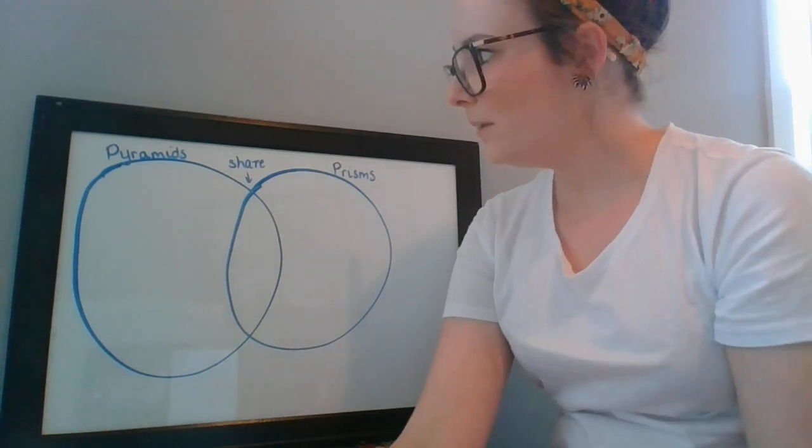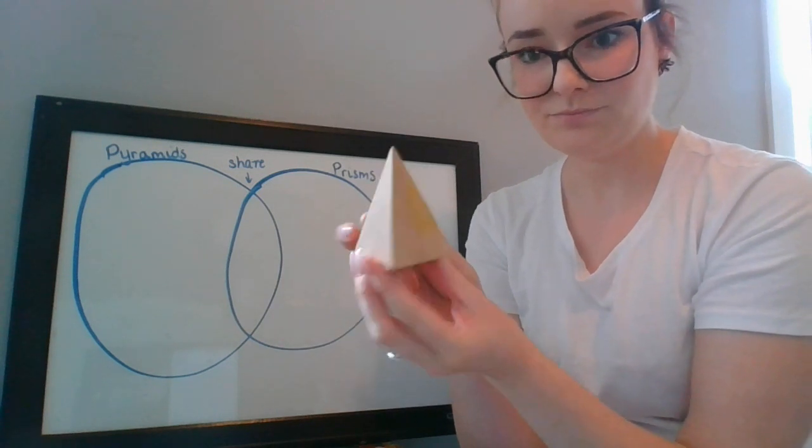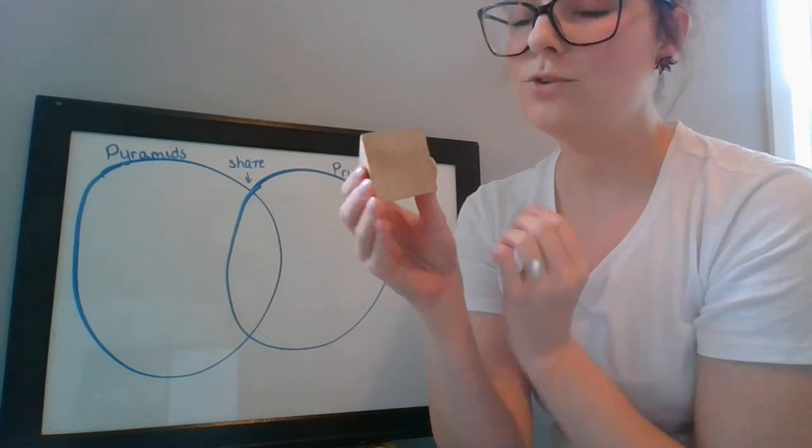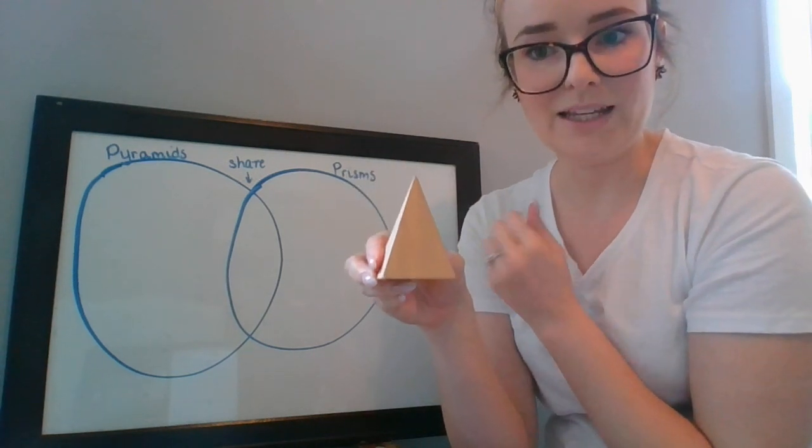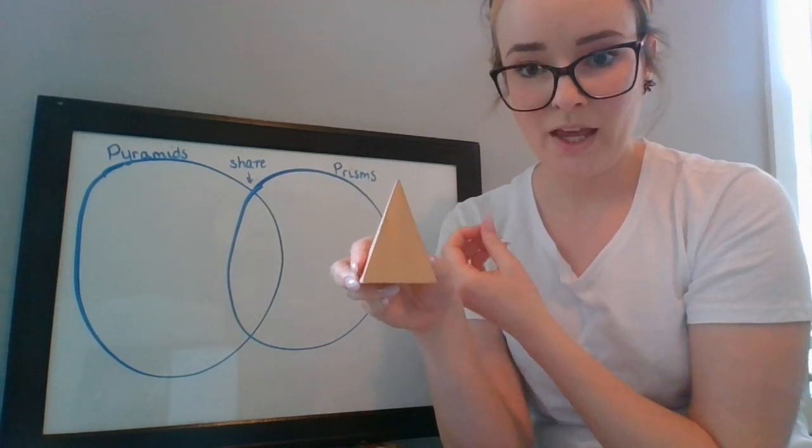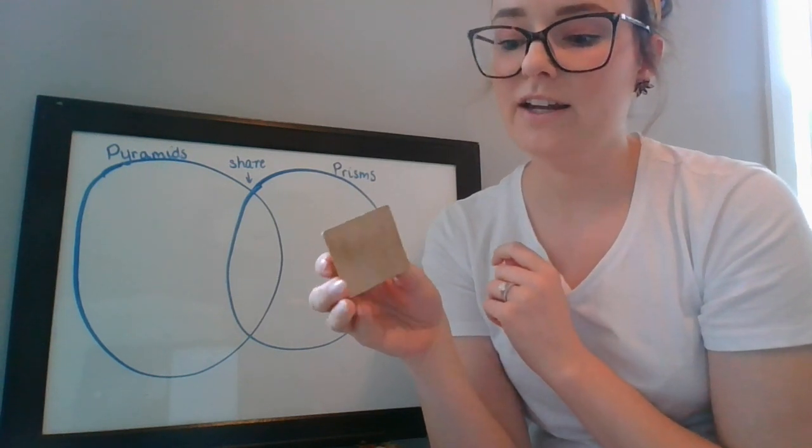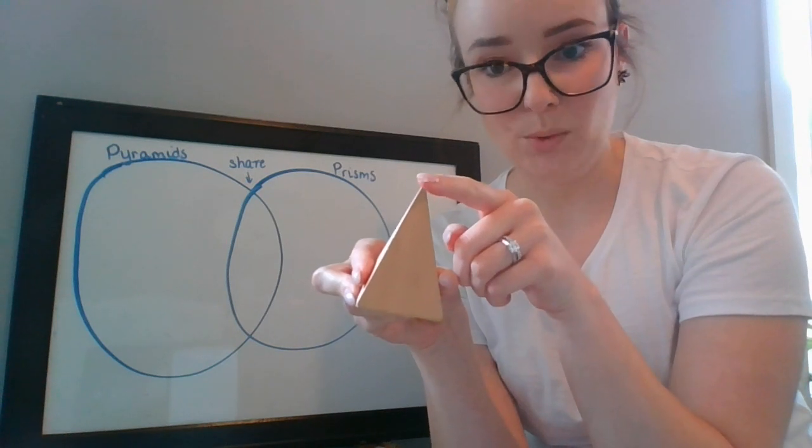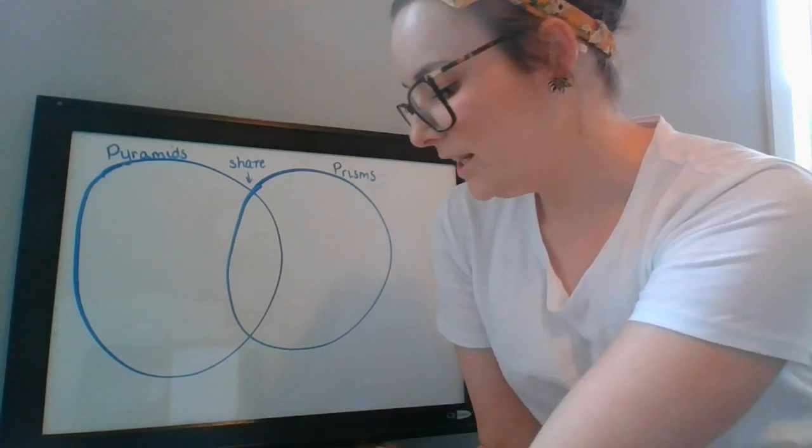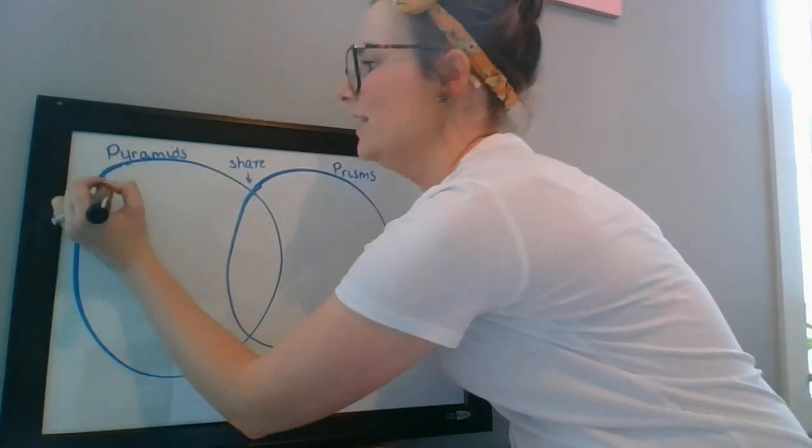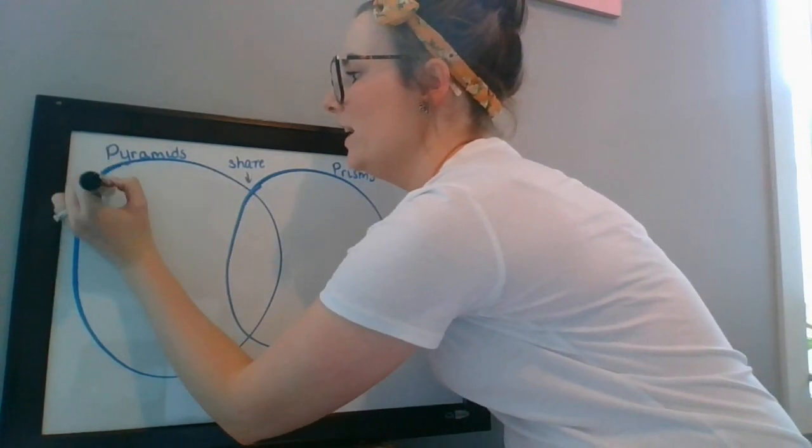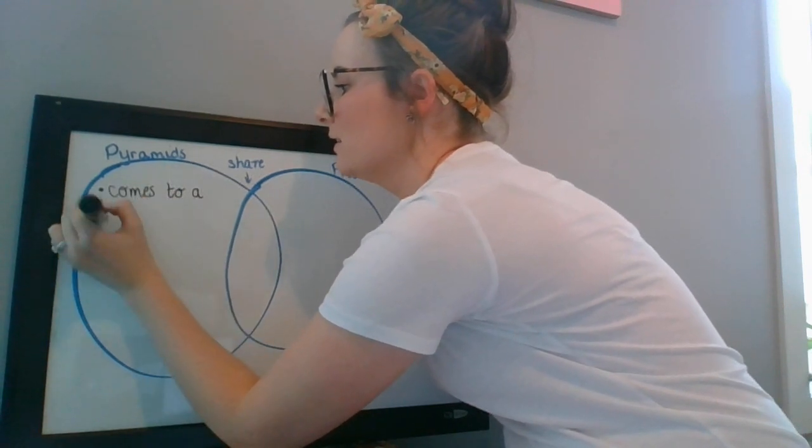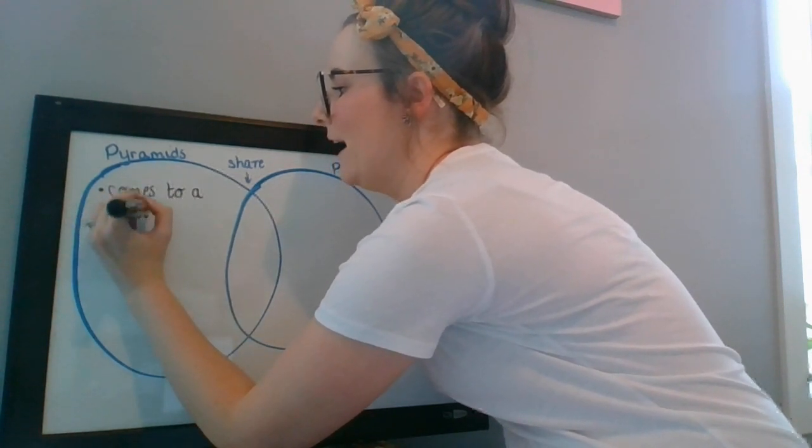Alright so I have my pyramid here. Having a little bit of a think, how do we know that something is a pyramid? We did say on Wednesday that we know that it is a pyramid because it comes up to a point at the top. So in my Venn diagram I can write that it comes to a point at the top.